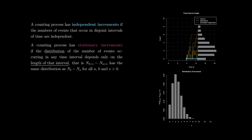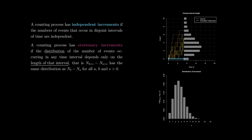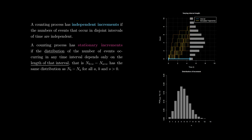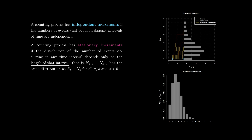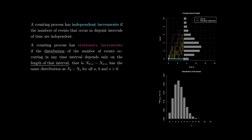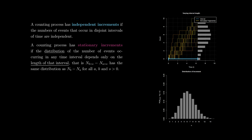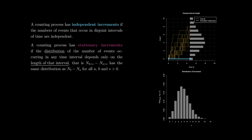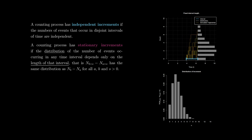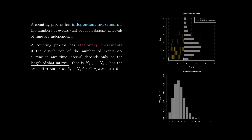A counting process has stationary increments if the distribution of the number of events occurring in any time interval depends only on the length of that interval and not where it is in time. That is, the count over the interval from S+A to S+B has the same distribution as the count over the interval from A to B, and this should hold for all S. For A and B fixed, the distribution does not change with respect to the reference point — it only depends on the length of the interval.